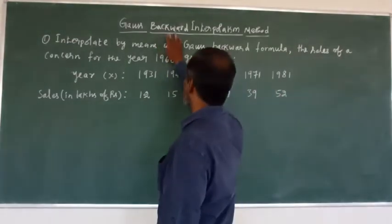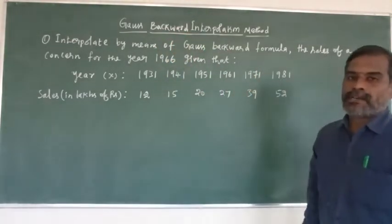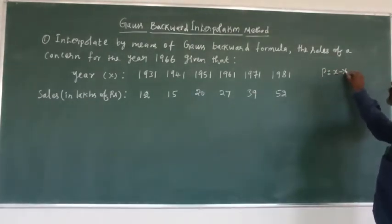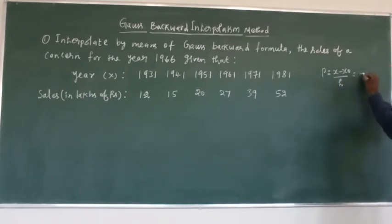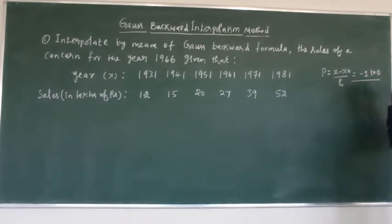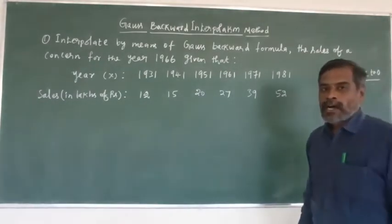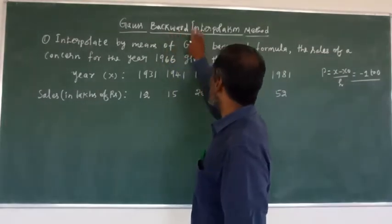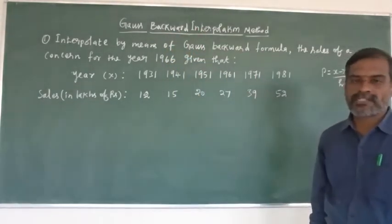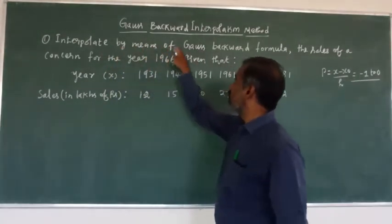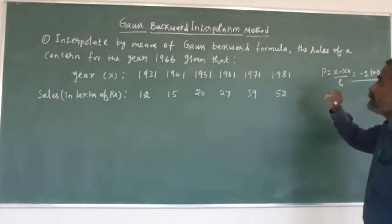In the Gauss backward interpolation method, the p value is equal to x minus x-naught divided by h. The p value lies between minus 1 and 0. At that time we can use the Gauss backward interpolation formula.